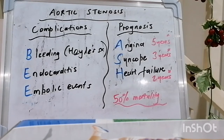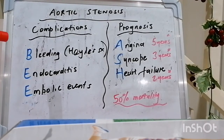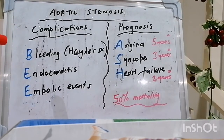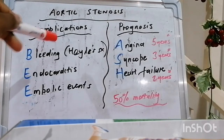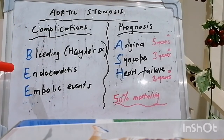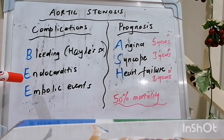We can also have low-gradient aortic stenosis resulting from low cardiac output. So what are the complications of aortic stenosis? B stands for bleeding, especially the combination of angiodysplasia with aortic stenosis and acquired von Willebrand disease type 2A. Those three entities constitute something we call Heyde's syndrome — a good association to note. Endocarditis can also complicate aortic stenosis, as well as embolic events, whether cerebral or systemic.